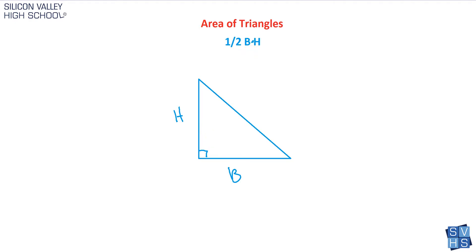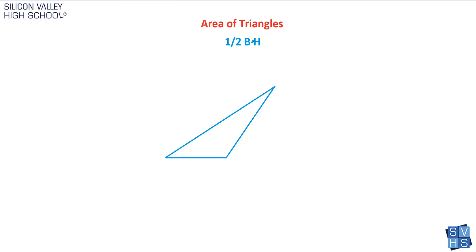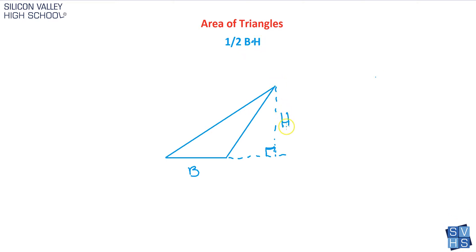Here's one more that's even weirder. What about this triangle? Both of these sides are not perpendicular to the base, so there's nothing that is perpendicular — I can't even draw one down the middle. It is possible that the height can actually be on the outside of the triangle, and it still has to be given for you to find the area. The examples you'll have will give you the height, but the height can legally be outside the triangle.